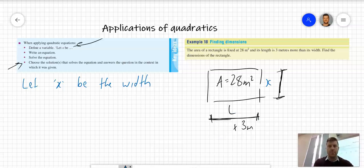In terms of the area of the rectangle, the area stays the same at 28 meters squared, but the width is x and the length is x plus 3. Now we need to write an equation.